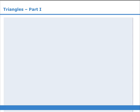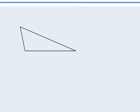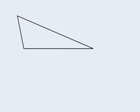In this lesson, we will examine some key properties of triangles. To begin, a triangle is a polygon with three sides. The points where the sides intersect are called vertices. Here the vertices are labeled A, B, and C.